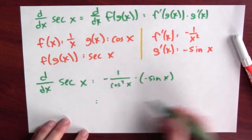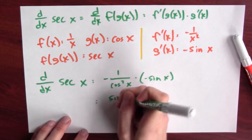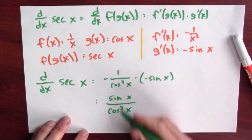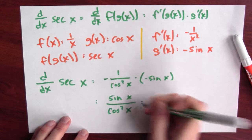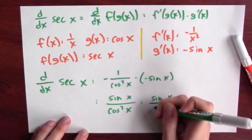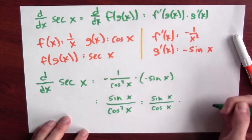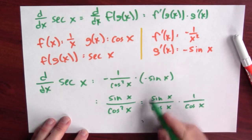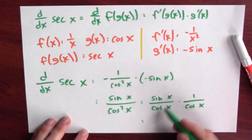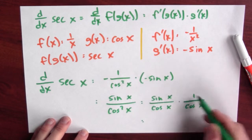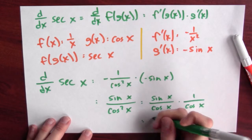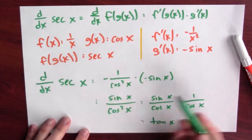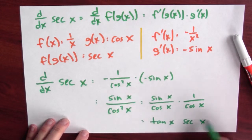Now combining these, the minus signs cancel, and we're left with sin(x) over cos²(x). We can rewrite this as sin(x)/cos(x) times 1/cos(x), which is tangent times secant. So the derivative of sec(x) is tan(x)·sec(x).